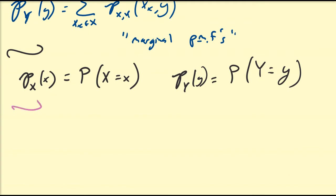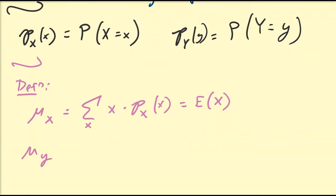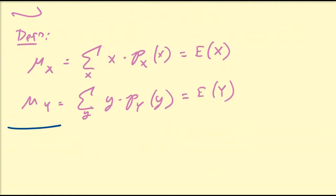So now let us define what this video is going to be focused on. The mean of random variable x is defined to be equal to the sum across all x values of x times the marginal function p_x(x), and some people represent this as the expectation E[x]. And mu_y, the mean of random variable y, is the sum across all y values of y times the marginal function p_y(y), which some people notate as the expectation E[y].